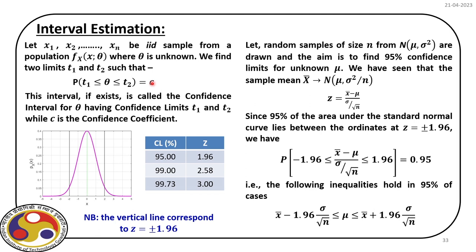We have already discussed the central limit theorem and its application. If we draw samples of size n from a population which we can assume is normal, and our aim is to find out the 95% confidence limit for unknown parameter μ, then x̄, the sample mean, follows a normal distribution with population mean μ and variance σ²/n. As n tends to infinity, we have the new variable z having zero mean and unit standard deviation.